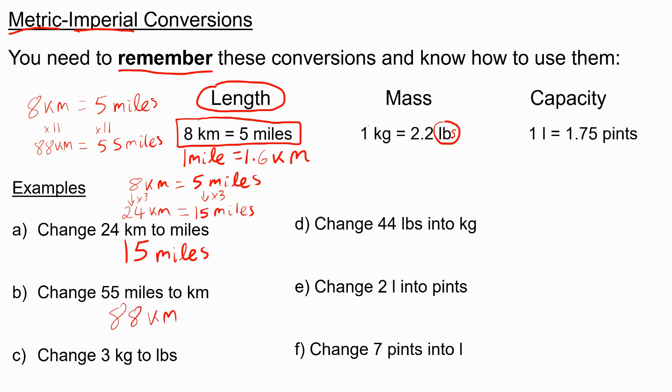If I want to change 3 kilograms into pounds, we know 1 kilogram is 2.2 pounds, so I just need to multiply both sides by 3. So I need to do 3 times 2.2 pounds. Well, 3 times 2 is 6, 3 times 0.2 is 0.6, so we have 6.6. So I can say 3 kilograms is 6.6 pounds.